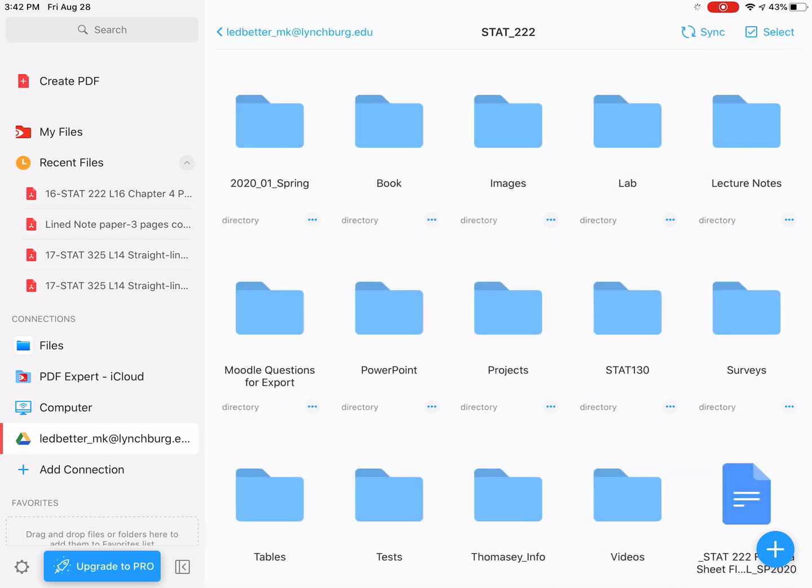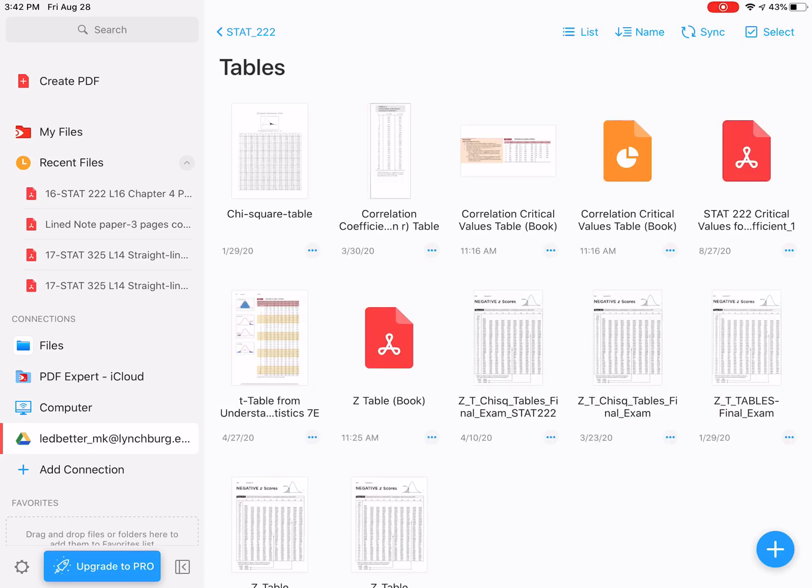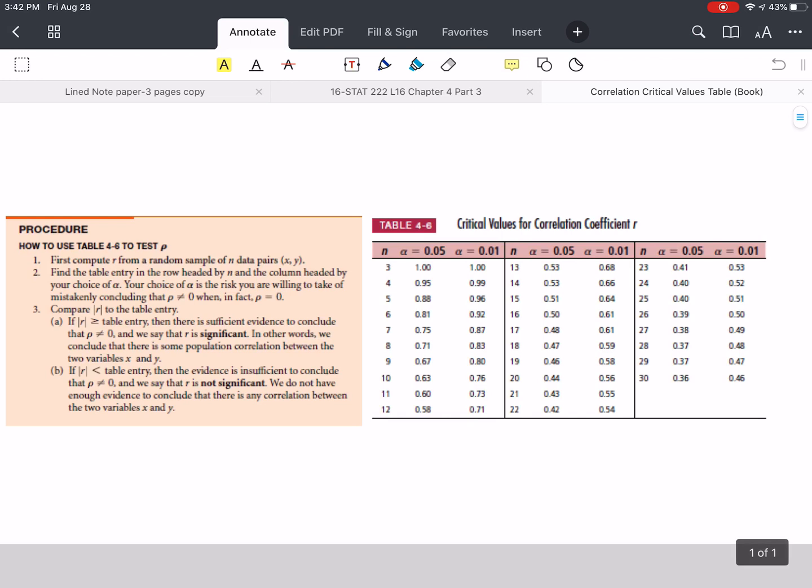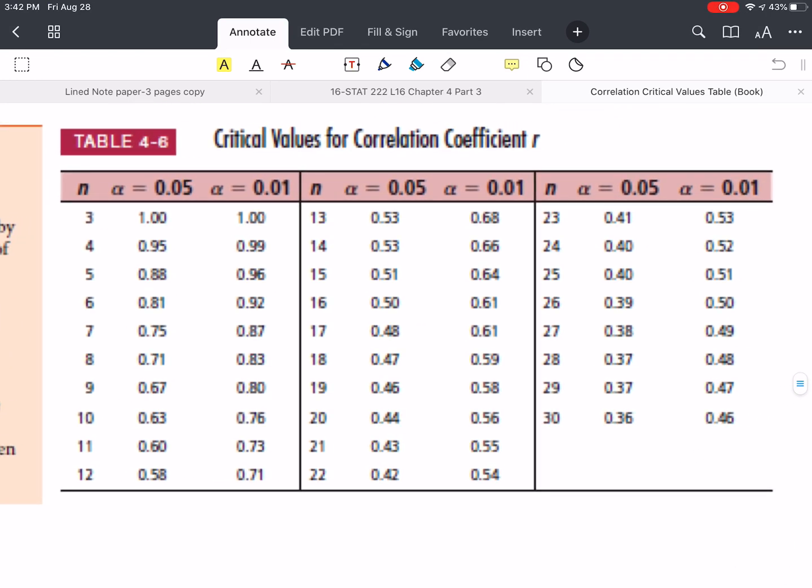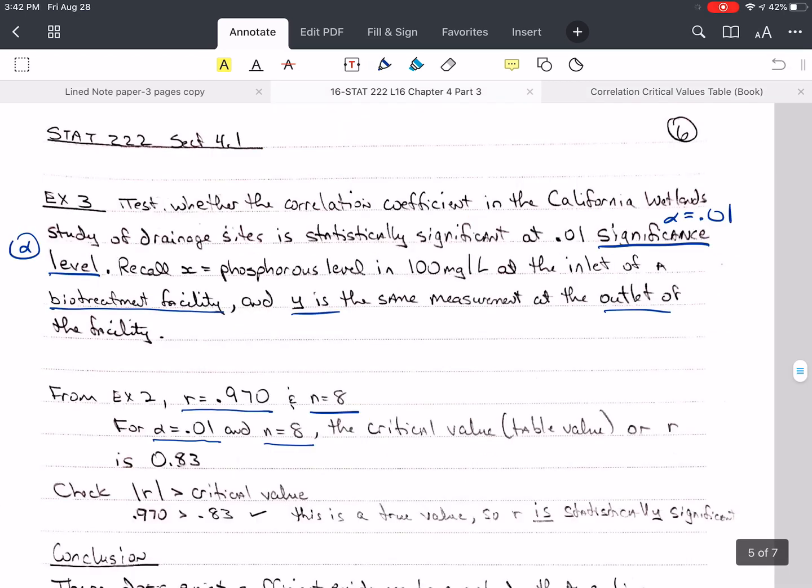I will go find it very quickly. Tables. And then I need this from the book. And now I need, I said that I want alpha as 0.01, and I want N is 8. So here's N is 8, and here's alpha is 0.01. So my critical value is going to be 0.83.